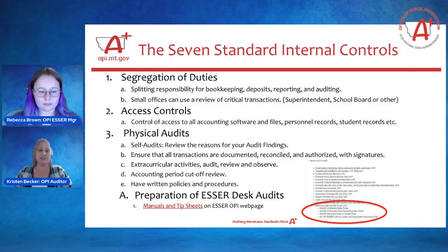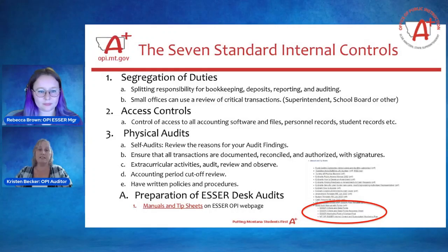Ensure that all transactions are documented, reconciled, and authorized with appropriate signatures. That is a huge one. Even if you do something that is wrong, at least if you have it documented, it can sometimes lessen the finding or at least provide the auditor with the reasonings so we can help you make corrections for the future. We find a lot of findings on extracurricular activities. Be sure to audit, review, observe, and watch them closely. They are not often monitored closely enough and those are going to be a big issue if you find too many findings on extracurricular activities.